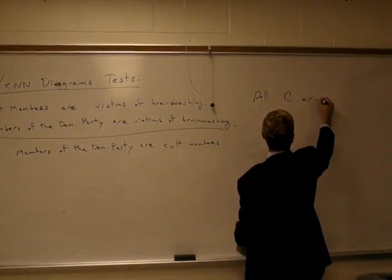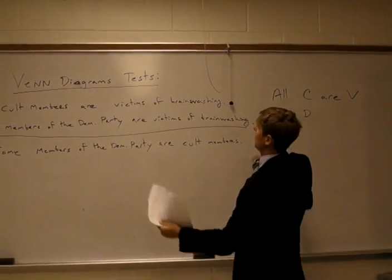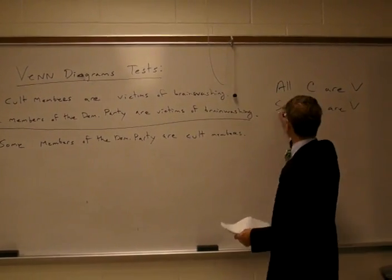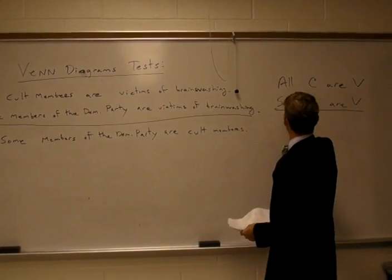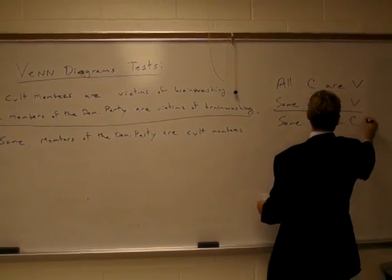Here we have a structure: all C are V, some D, we'll call it members of the Democratic Party, are V, victims of brainwashing. Therefore, some D, members of the Democratic Party, are C, cult members.